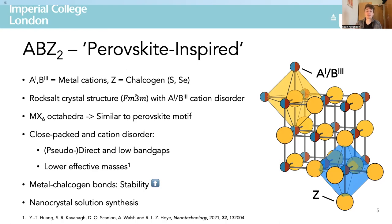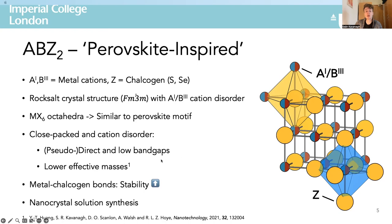This close packing and high dimensionality, in combination with disorder on the cation sublattice, is one of the key benefits of this material class. We now have a pseudo-direct band gap with a low and ideal energy for solar absorption and low carrier masses. In the studies I'll talk about today, we sought to understand the impact of this disorder on the cation sublattice and to then leverage these insights to optimise photovoltaic performance.